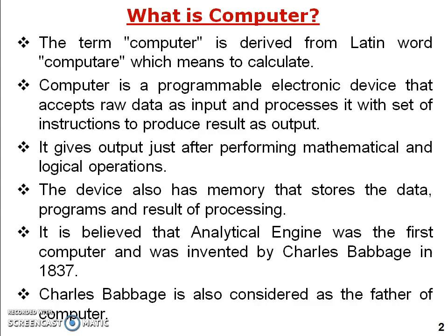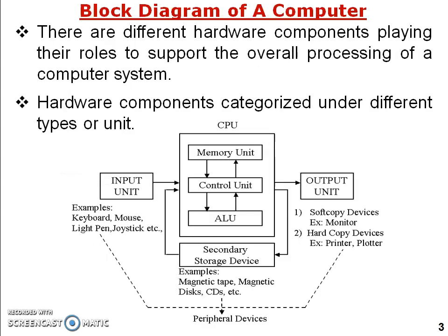So a computer takes inputs, processes those inputs, and produces an output, which is also stored in memory. Here is a block diagram of a computer showing the different hardware components playing their role to support overall processing. Without hardware, processing is not possible. Hardware components are categorized under three types of units: input units, central processing units, and output units. The CPU has three sub-units: memory unit, control unit, and arithmetic and logic unit. There is also an additional unit called secondary storage device, used to store data for future use.